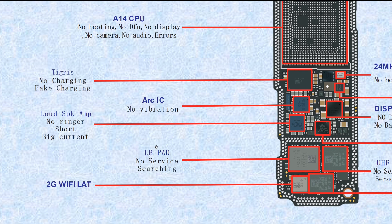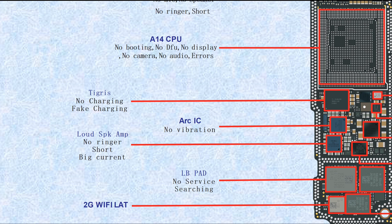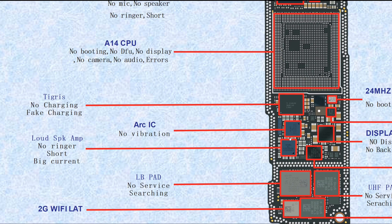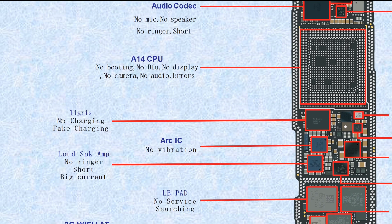This one is LPLBPAD — LB PAD means low band power amplifier. If broken, it causes no service or searching. This one is the loudspeaker amplifier. This one is ARC IC — ARC here means vibrator, vibration IC. If broken, it causes no vibration. This one is the Tigris IC for charging — if broken, it causes no charging or fake charging.